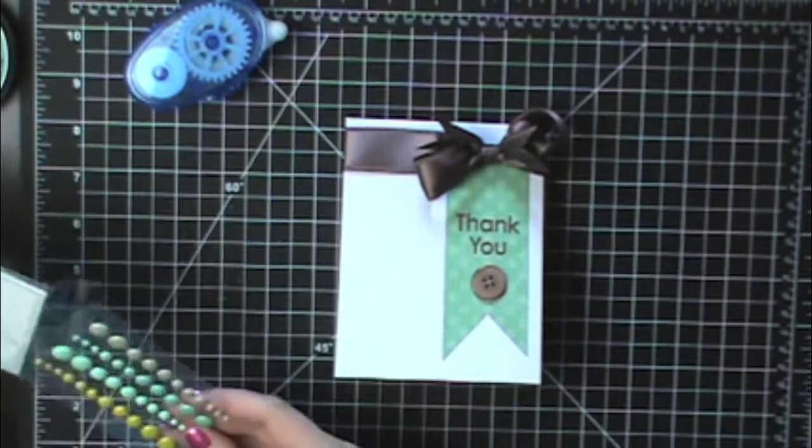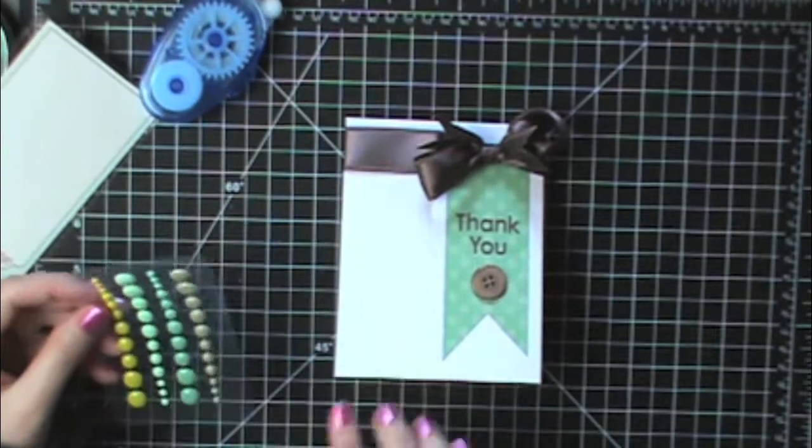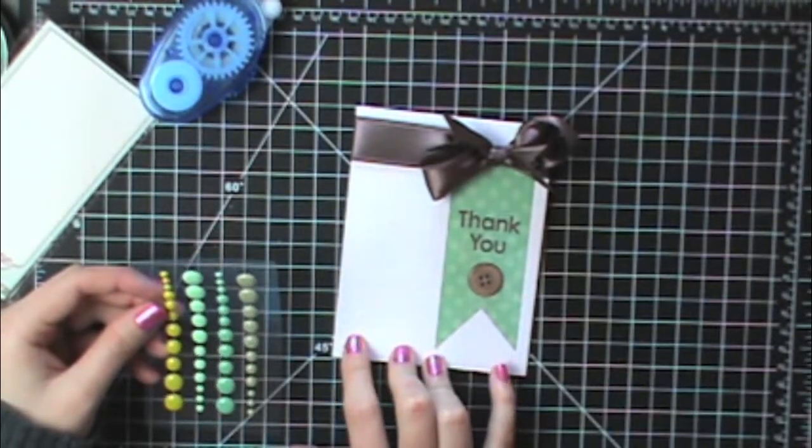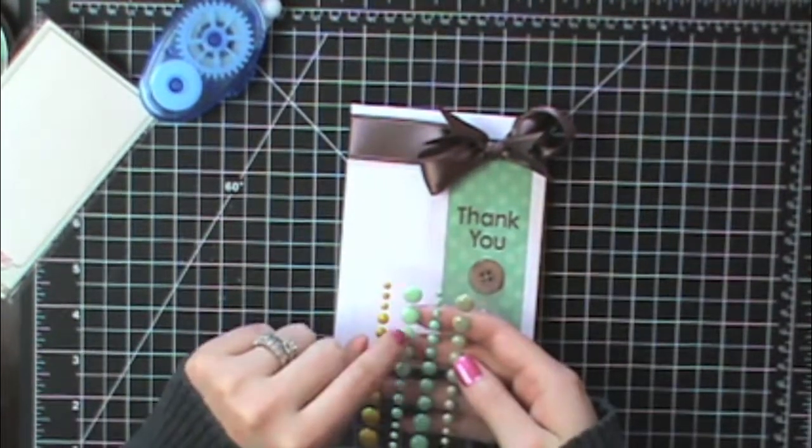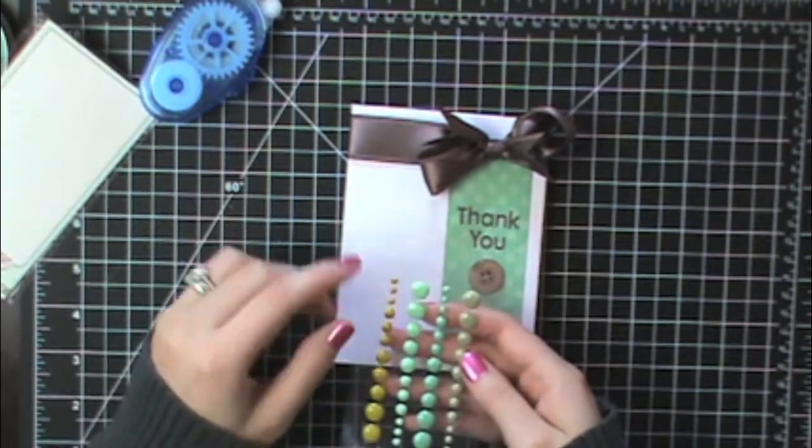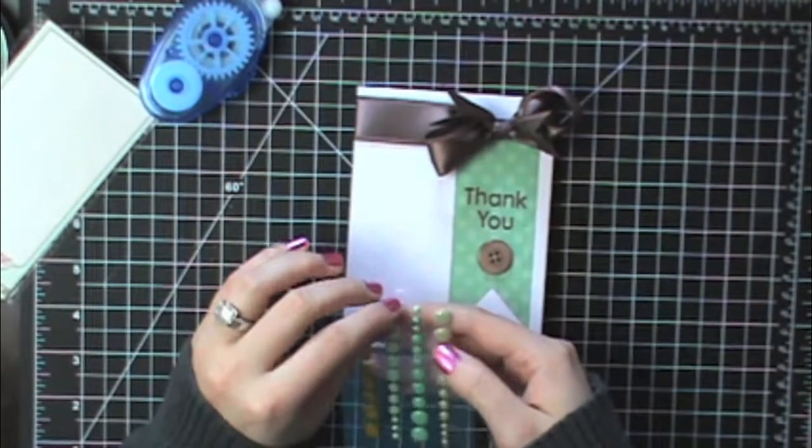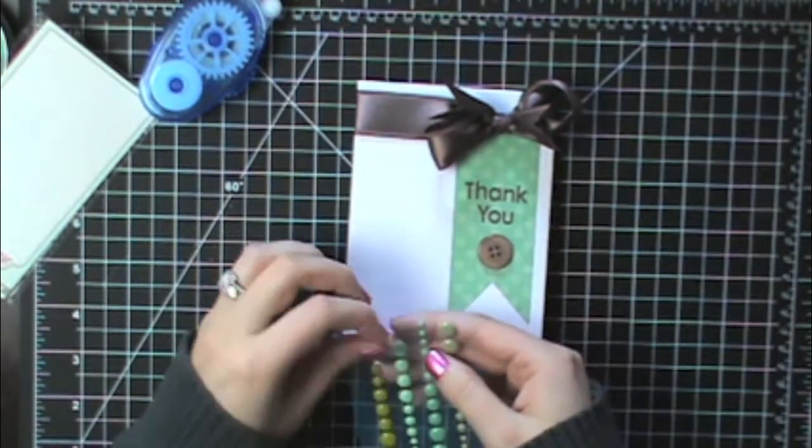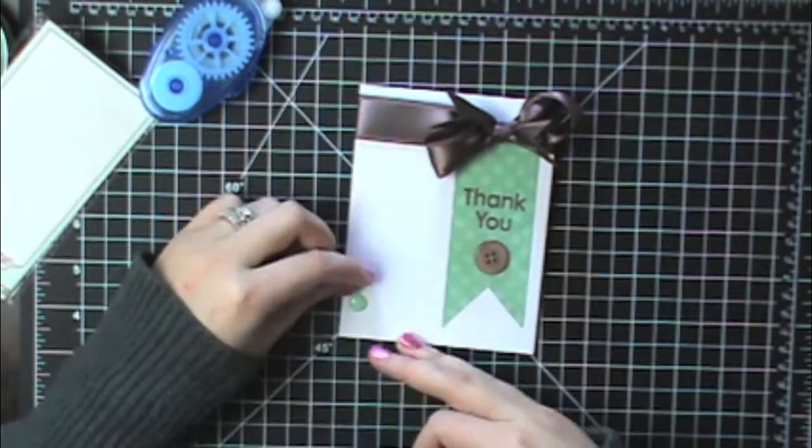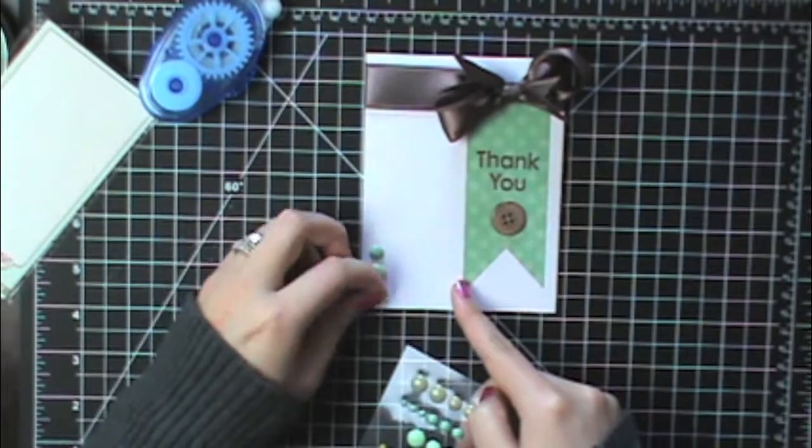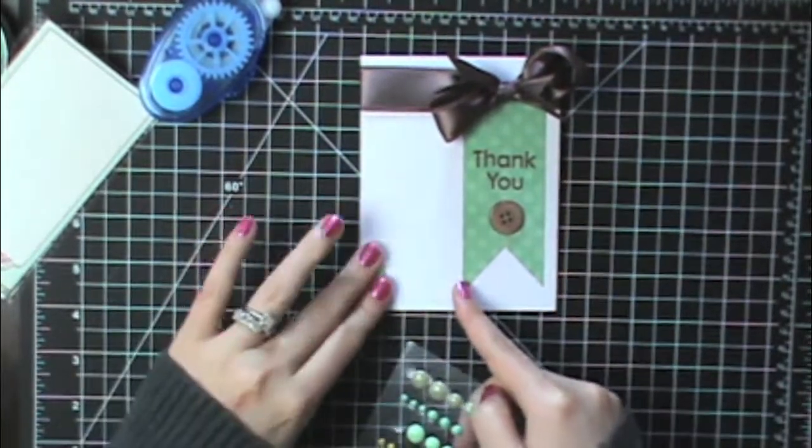I've got some of these enamel dots. I thought I would put a couple down here and then a little cluster of them up here. So I like these three colors here. I don't want to bring in that yellow. It's a little too bright. So I'm just going to grab some and stick them down here.